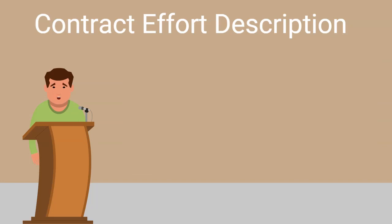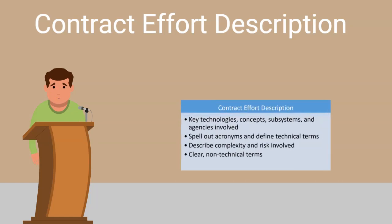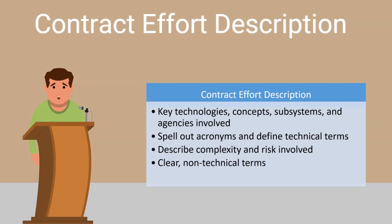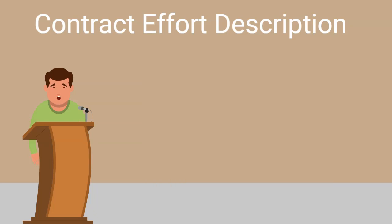After you have written your contract effort description, remember to check these questions as you review your work: Does it include a detailed description of key technologies, components, subsystems, and agencies involved? Are acronyms spelled out and technical terms defined? Does it describe the complexity and risk involved in performing the work? And, is your contract effort description written in a clear, non-technical manner? If you have addressed these questions, then your contract effort description is complete, and you're ready to begin writing the evaluation, to include ratings and narratives. Thanks for your time today.